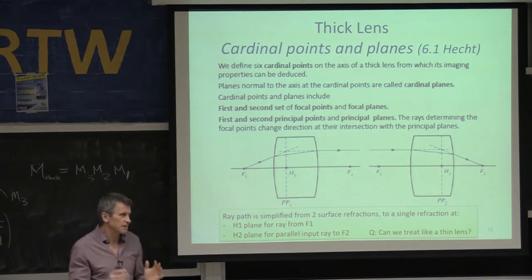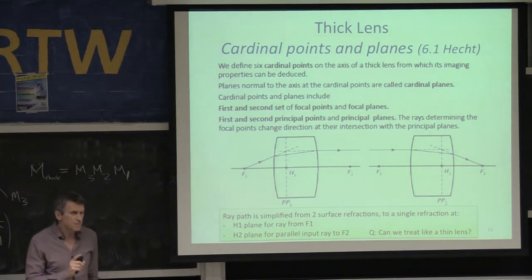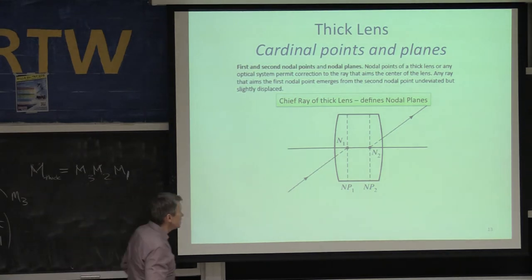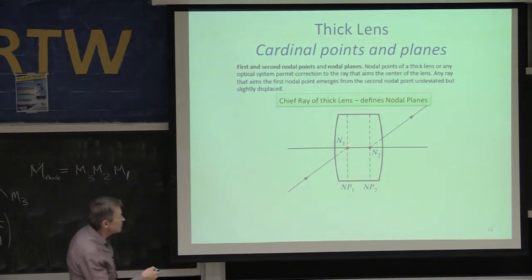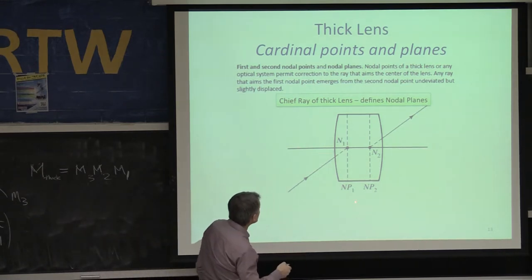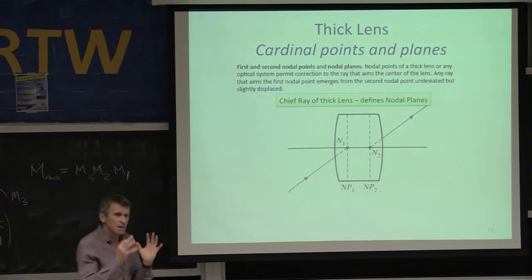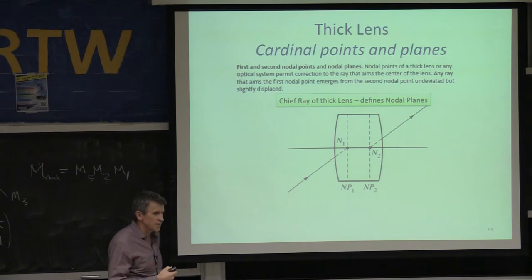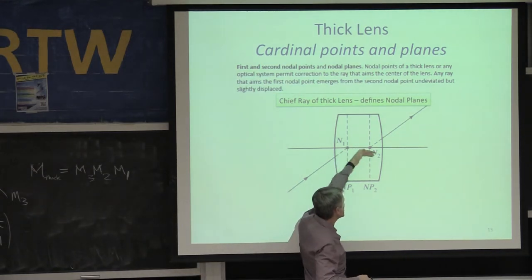This is beyond what I'll test you on, but recognize that there's a principal plane associated with focal positions 1 and 2. A second consideration is a correction for the chief ray. We've always put the chief ray through the center of the lens, but as it gets thicker, there's a displacement. The chief ray still comes out at the same angle but displaced. This displacement is noted at the optical axis and defines nodal points N1 and N2, and nodal planes.